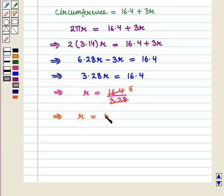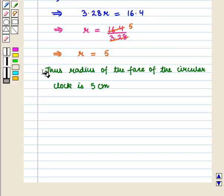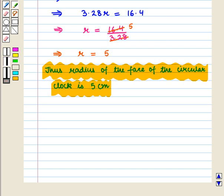R is equal to 5. Thus we can say that the radius of the face of the circular clock is 5 centimeters, which is the required answer.